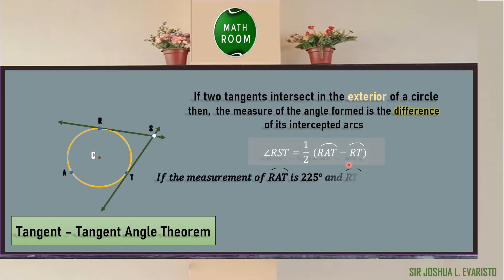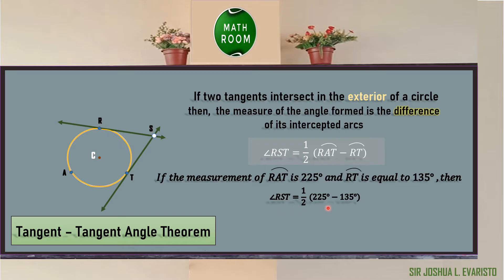For example, if arc RAT is 225 degrees and arc RT is 135 degrees, we solve angle RST by substitution: angle RST = one-half of (225° − 135°) = one-half of 90° = 45 degrees. Therefore, angle RST is equal to 45 degrees.